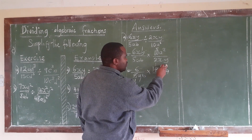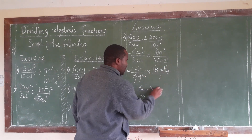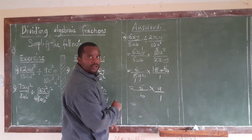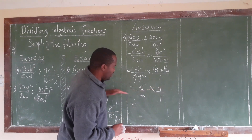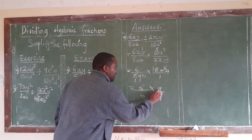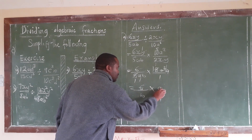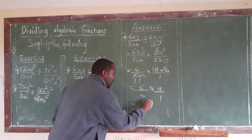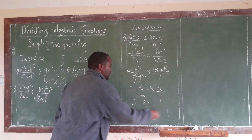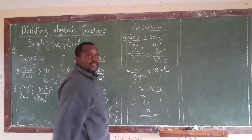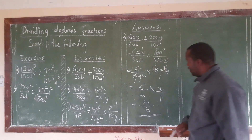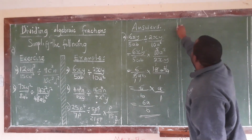So what we have now is 6 over b times a over 1. We do the multiplication: numerator times numerator gives 6a, and the denominator gives b. So the answer is 6a over b.